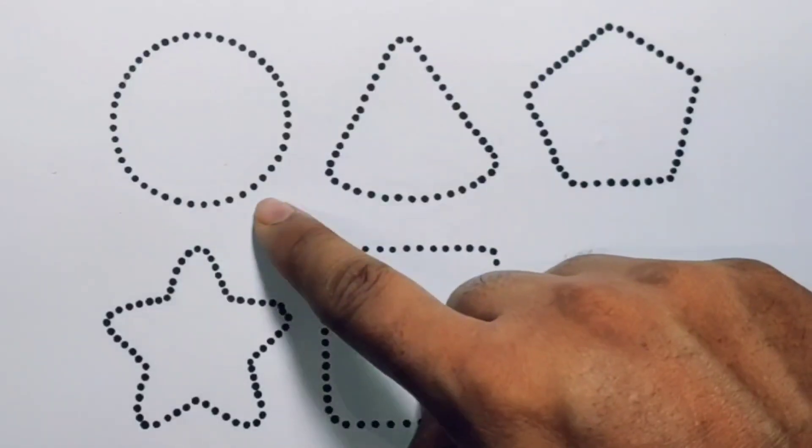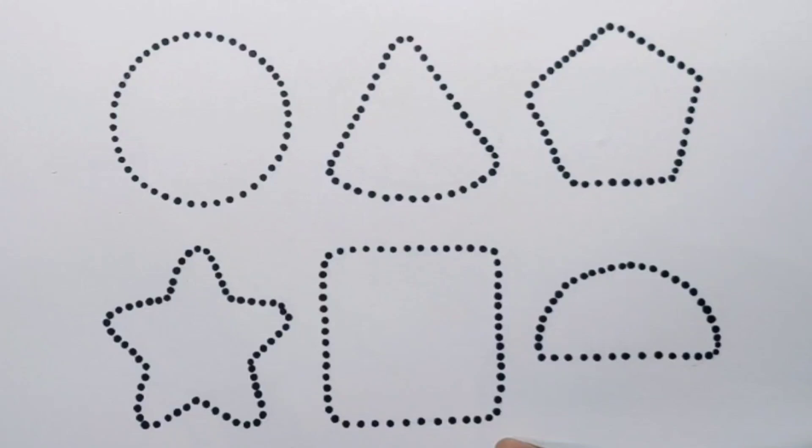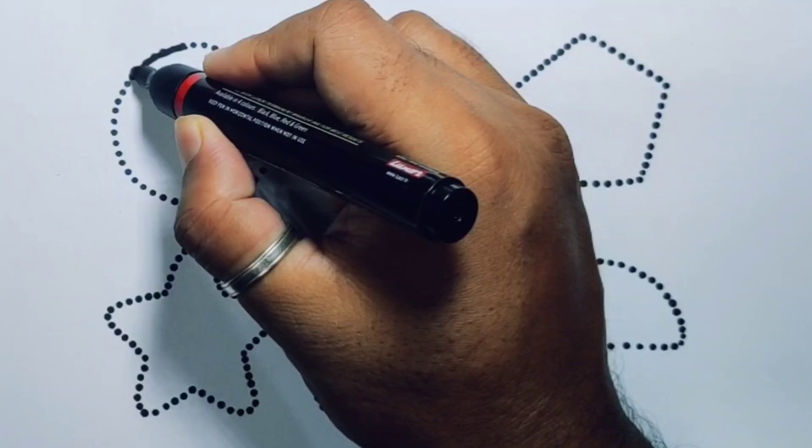Circle, triangle, pentagon, star, square, and semicircle. First we're going to draw the shapes. Circle.